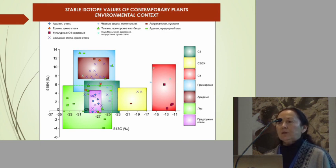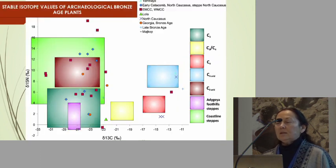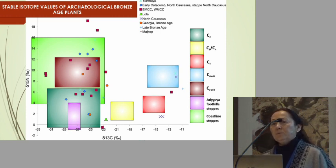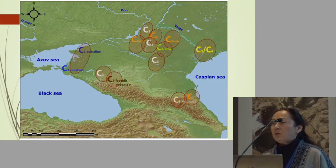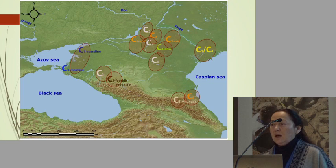We could speak about C4, C3, mixed C3/C4 plants, and C4 arid plants. It was also very important to understand whether this kind of variation existed in the past, in the Bronze Age. Due to the special aridity of the soil, we have a lot of plant fruit seeds preserved in graves and settlements. They date back to the Bronze Age, and again you can see we have large variations in the stable isotope values of plants and seeds dating back to the Bronze Age.